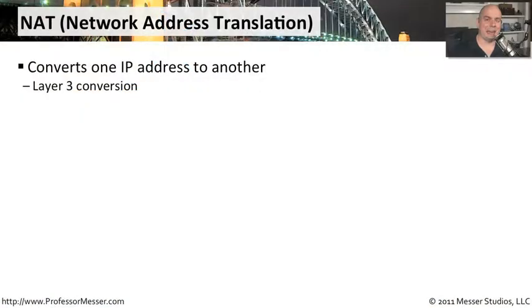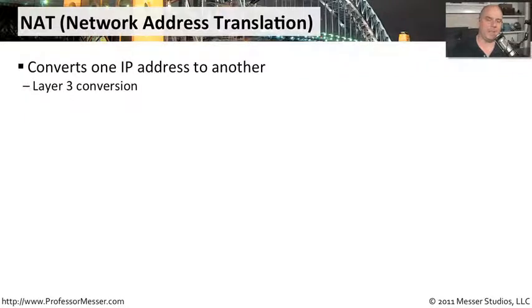The process of NAT, or Network Address Translation, is one where a router, firewall, or some other type of Layer 3 device will take an IP address, convert it, and send the packet on its way. We very often see this as a one-to-one NAT, where if traffic is going to a specific IP address from a specific IP address, that particular address would be changed. That conversion is always going to take place at Layer 3.